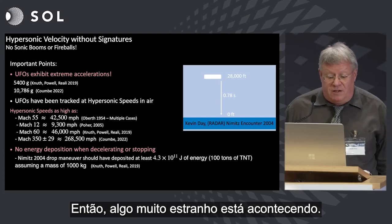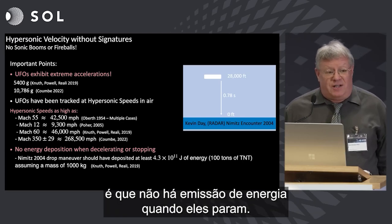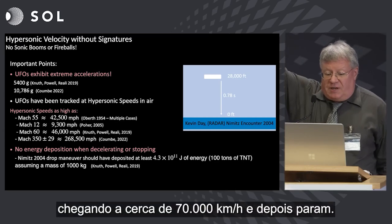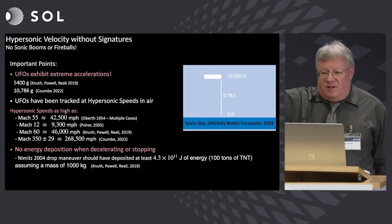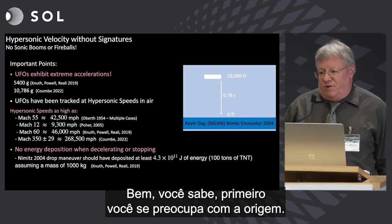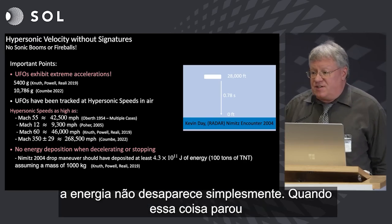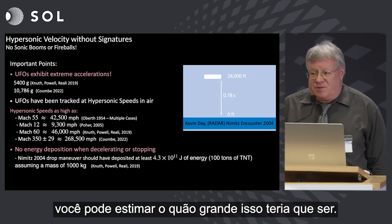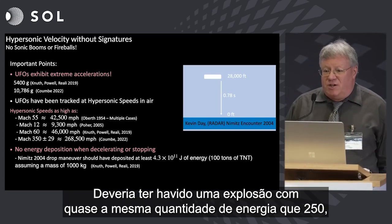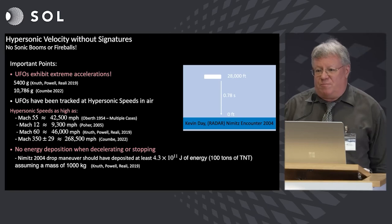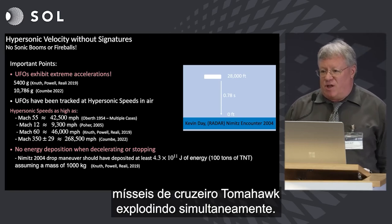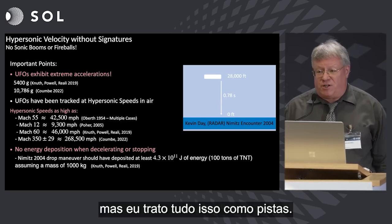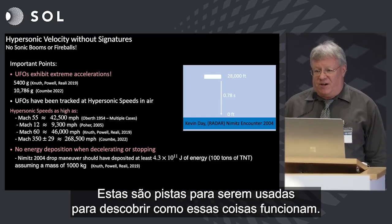Something very strange is going on. One thing that's almost never mentioned is there's no energy deposition when they stop. This thing drops from 28,000 feet to sea level, getting up to about 42,000 miles per hour in the middle, and then stops. Where did all that energy go? Energy doesn't just disappear. When this thing comes to a stop, there ought to have been an explosion. Given the amount of power involved, it should have been an explosion with about the same energy as 250 Tomahawk cruise missiles simultaneously blowing. That's what should have happened. It didn't. What's going on? We don't know. But I treat these all as clues — clues to be used to figure out how these things work.